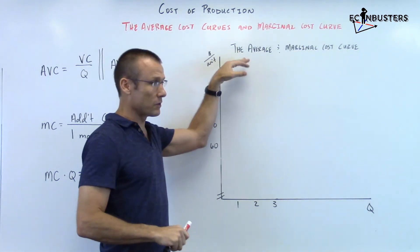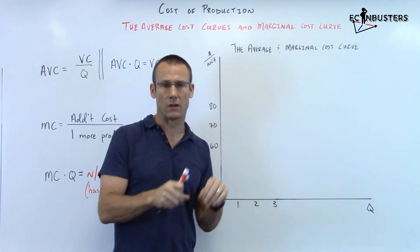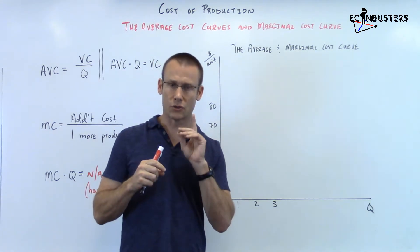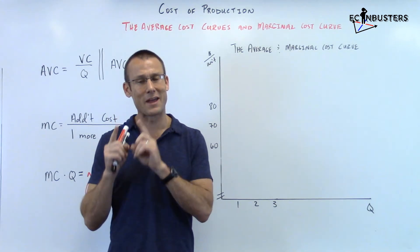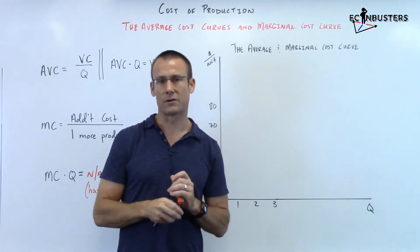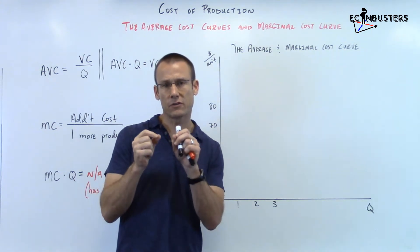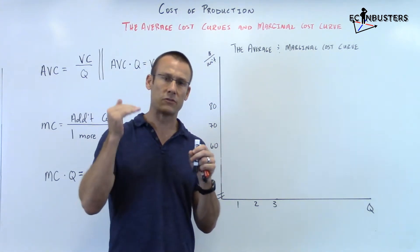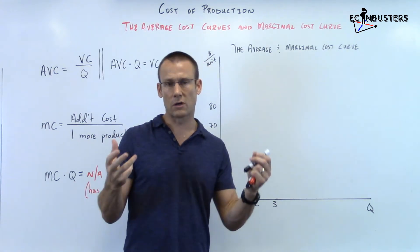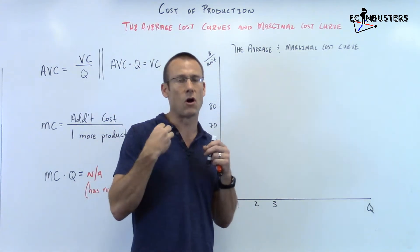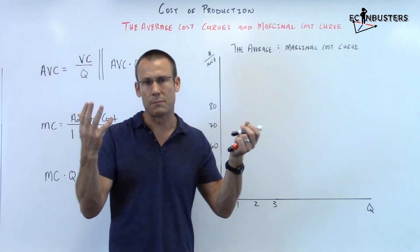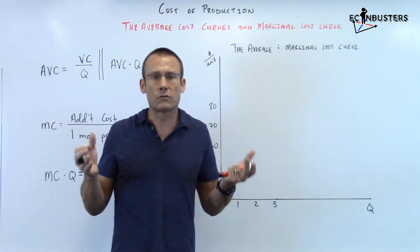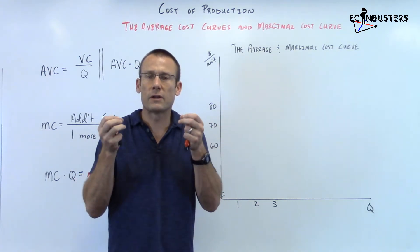I'm going to try to graph some things in parallel: marginal cost paralleled with something we all understand — our marginal grade — and average variable cost paralleled with our average grade. What is our marginal grade? That is the grade we make on a specific assignment. What's our average grade? You take all the grades you made on your specific assignments, divide by how many assignments there were, and you have your average. We all understand both — we just never called it our marginal grade before.